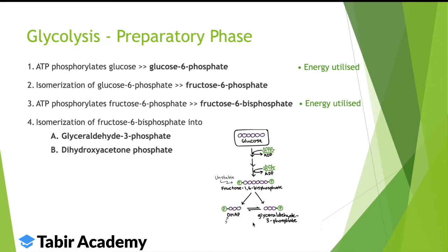The two 3-carbon molecules produced are dihydroxyacetone phosphate (DHAP) and glyceraldehyde 3-phosphate (G3P). The DHAP is converted into glyceraldehyde 3-phosphate as well. So for one glucose molecule, there are two glyceraldehyde 3-phosphate molecules.